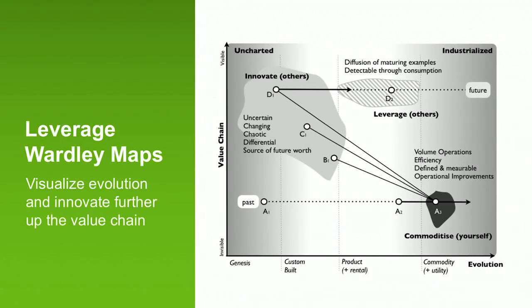This is what a Wardley map looks like. This is a fairly generic one, and it talks about how things evolve and how the value chain is mapped out. At the top, you have things that are visible where customers are touching your system. At the bottom, it gets more and more invisible — more layers of technology. Going from left to right, you have Genesis, which are brand new things that have never existed before, then custom-built things, then products and rental — things like off-the-shelf, common off-the-shelf software or open source projects. And finally, on the right, you have commodity and utility — things like web services, and a lot of AWS services end up here on the right.